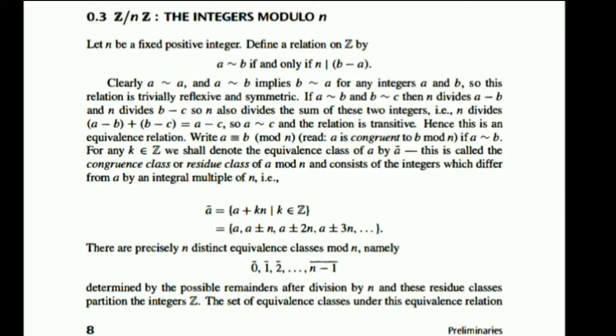Well friends, in this video we shall discuss about the set Z/nZ, that is the integers modulo n. Previously, if a and b are elements from Z, we define a relation: a is congruent to b if n divides b minus a. We have already seen that this relation is reflexive, symmetric, and transitive.